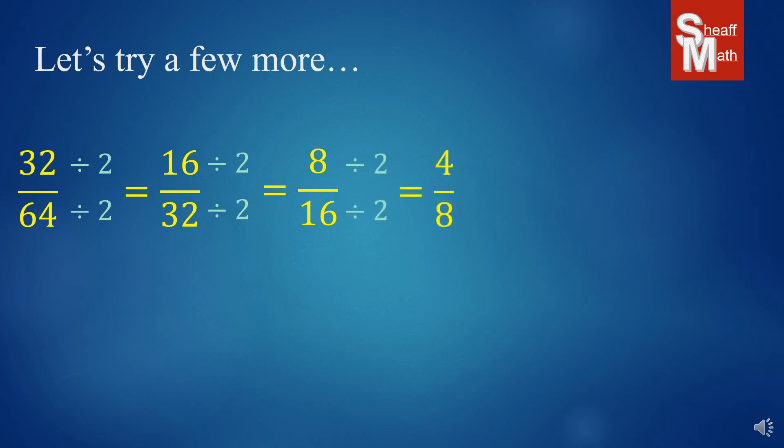And I keep simplifying it by dividing by two over two because they're all even. And finally, I get my answer of one half. Did you know that 32 over 64 is one half? Some people can recognize that right off the bat, but sometimes we need to start dividing factors.